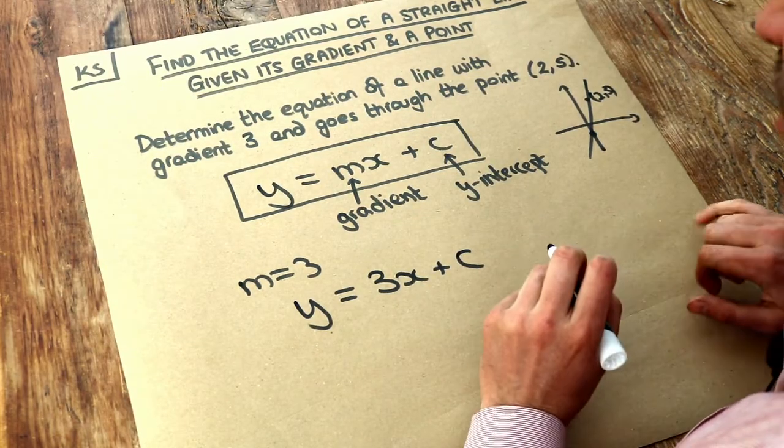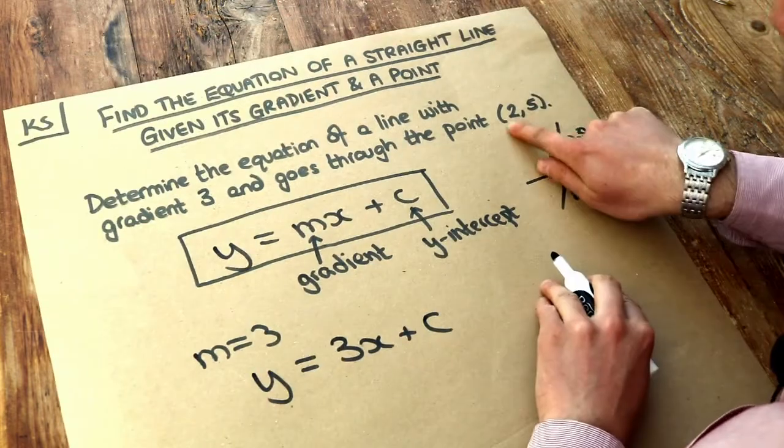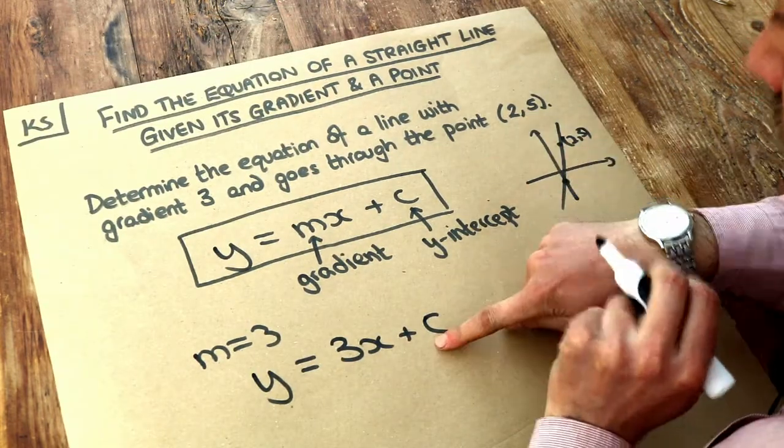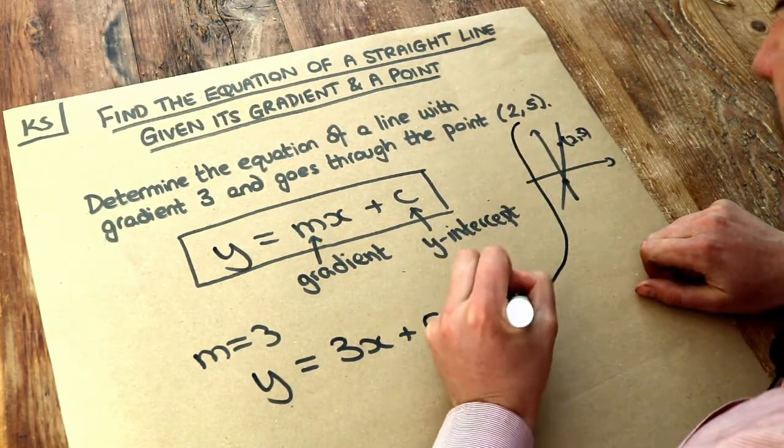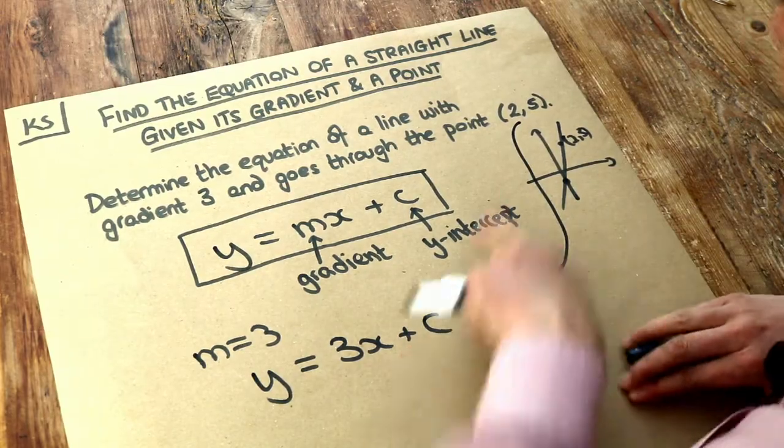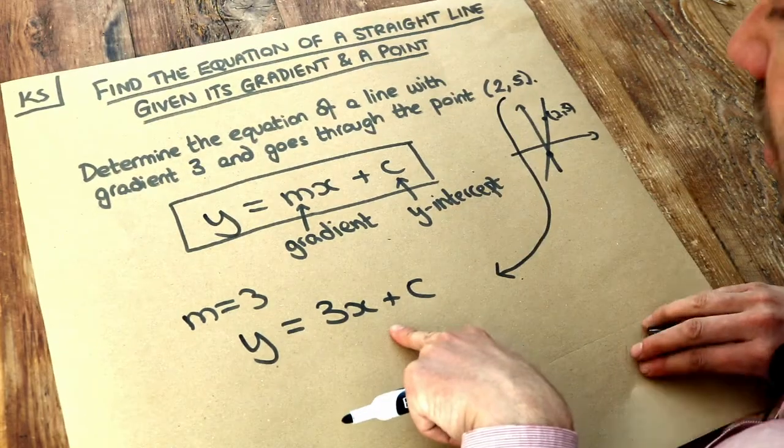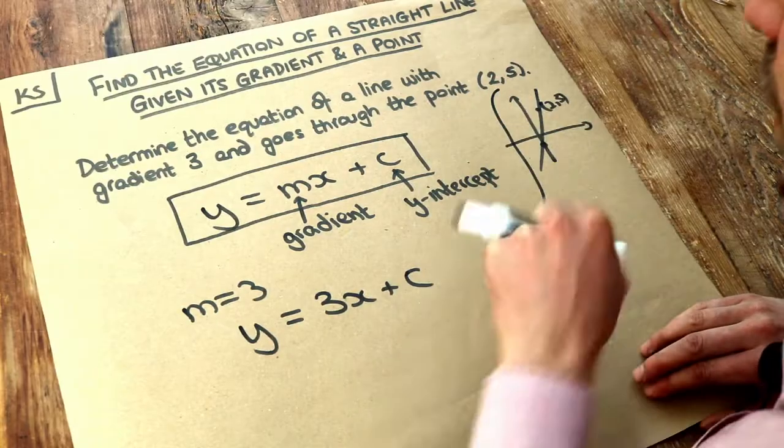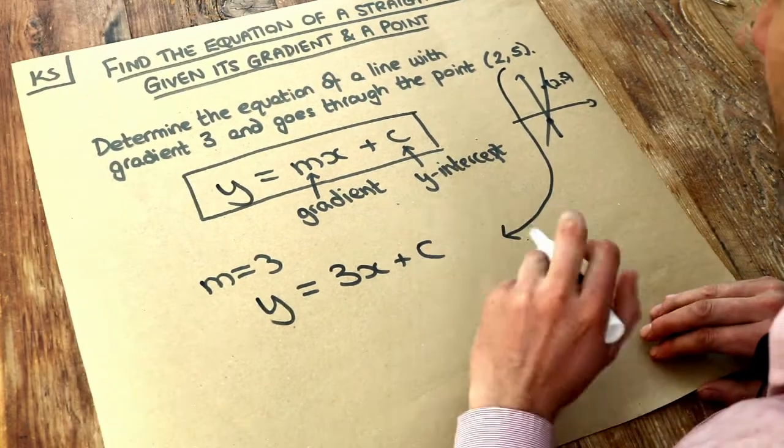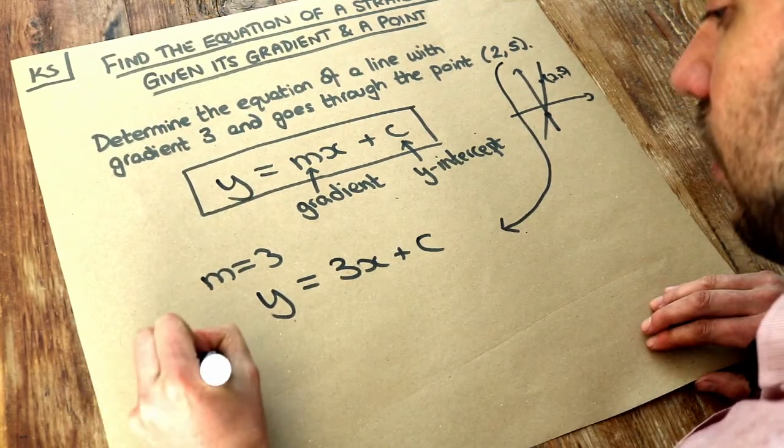But at this point, what we can do is say, well, if the point (2,5) is on this line, then we can substitute this into this equation, because we know that (2,5) has to obey this equation if it's on the line. So let's do that. We substitute in (2,5).